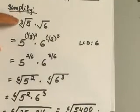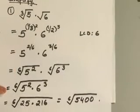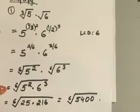So even though you start out with different indexes, you go through the process of making them have the same index and then you start applying the product rule and you will come up with your answer.